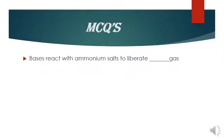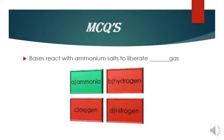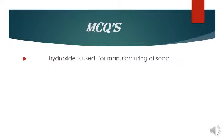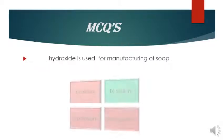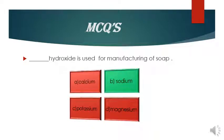Now let's look at MCQs for this topic. Number one: bases react with ammonium salt to release which gas? The answer is ammonia gas. Another MCQ: which hydroxide is used for manufacturing of soap? Sodium hydroxide — option B is correct. Memorize the bullet points first to answer MCQs. Clear?